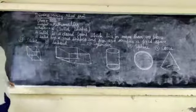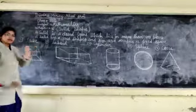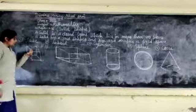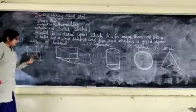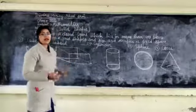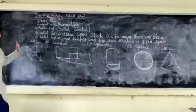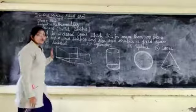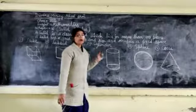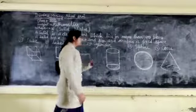Now, edges. Edges mean the line segments where two planes meet. Suppose that two lines meet like that — those are edges. Counting the edges of a cube: one, two, three, four, five, six, seven, eight, nine, ten, eleven, twelve. A cube and a cuboid both have twelve edges — that means twelve line segments. A cylinder has two edges. A sphere has no edges. A cone has one edge.